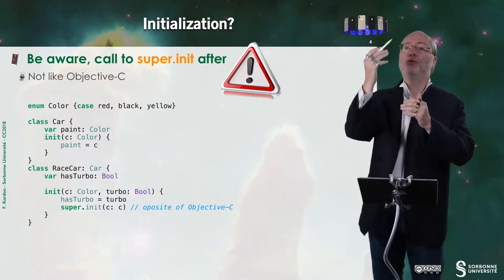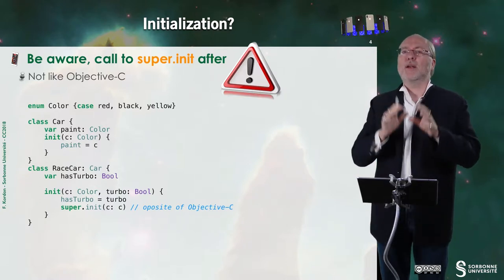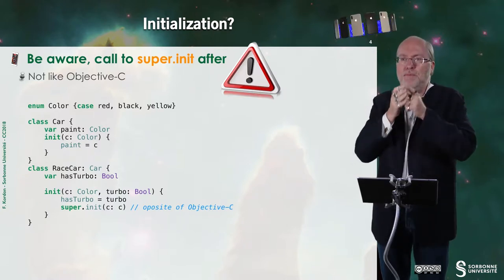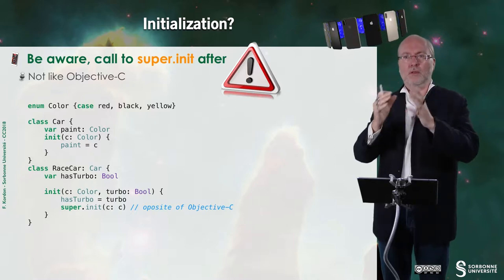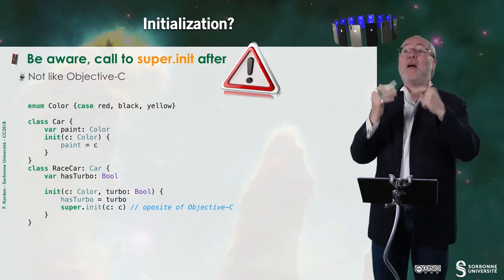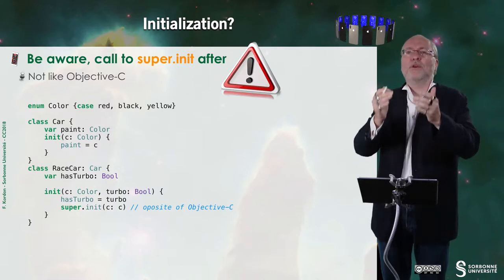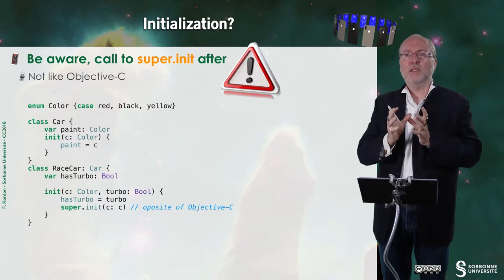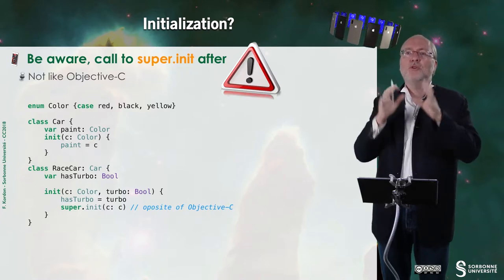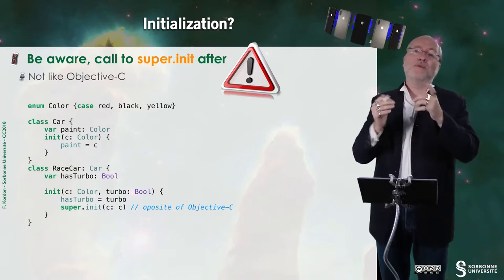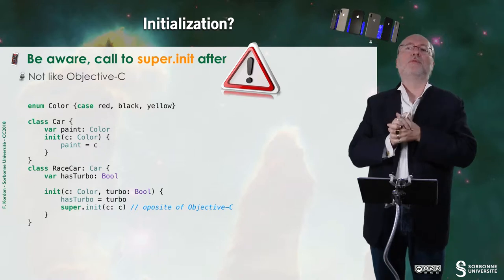You have to be very careful when you implement init. It's important because you have to call super init, init of the super class. Not like Objective-C before initializing your properties, but after. The difference is because when you reach the init function, allocation is already done. While in fact in Objective-C it's done differently.